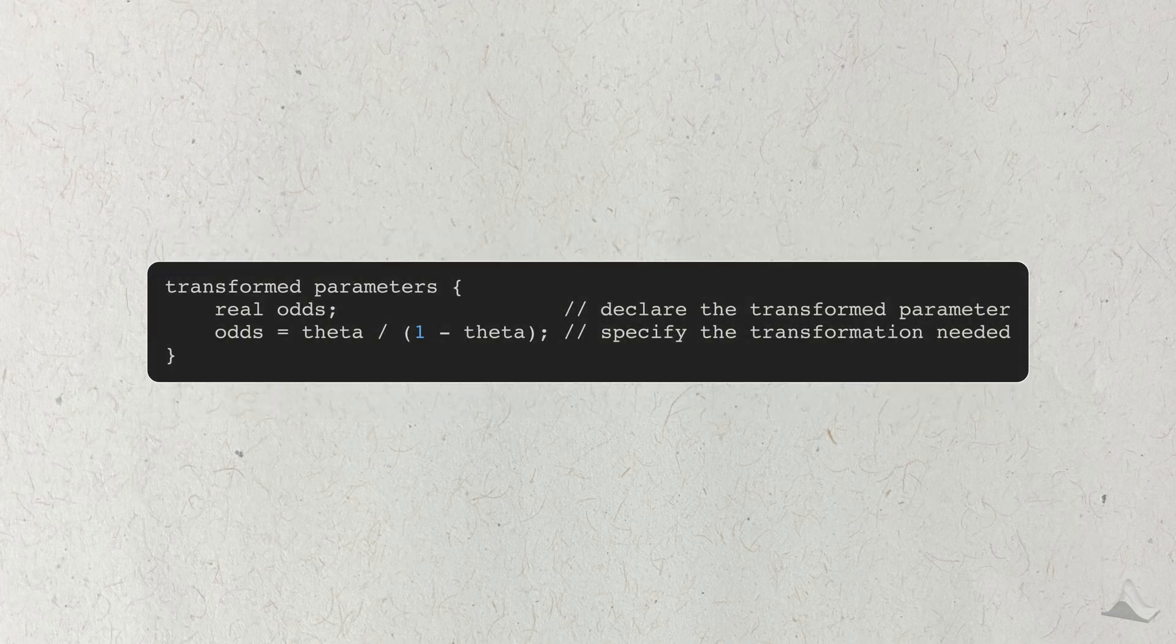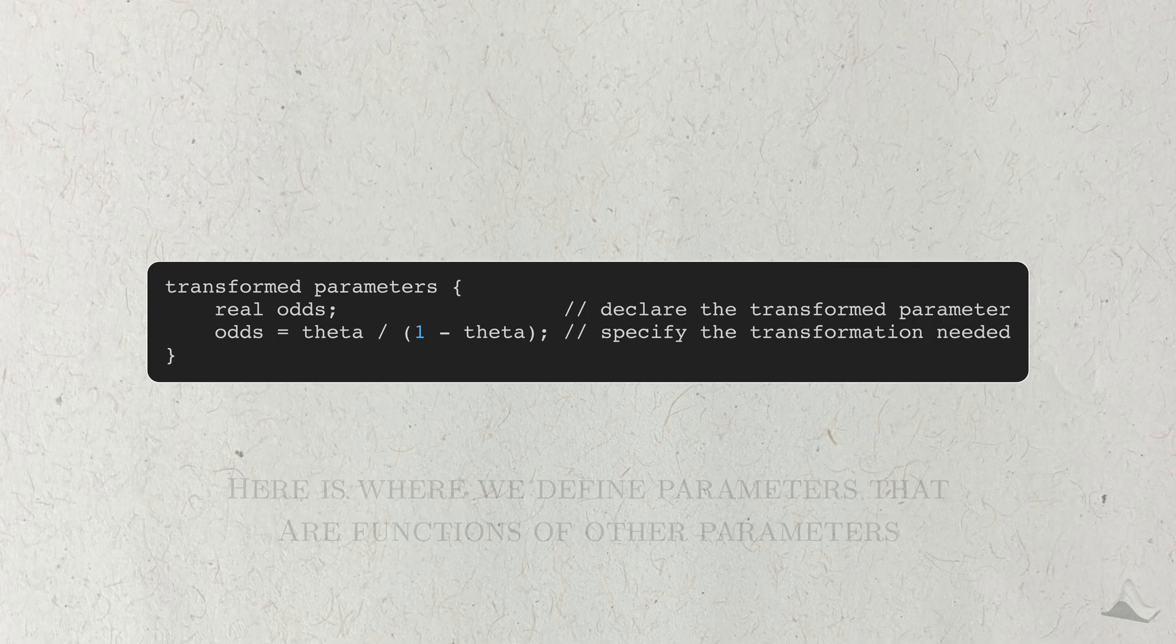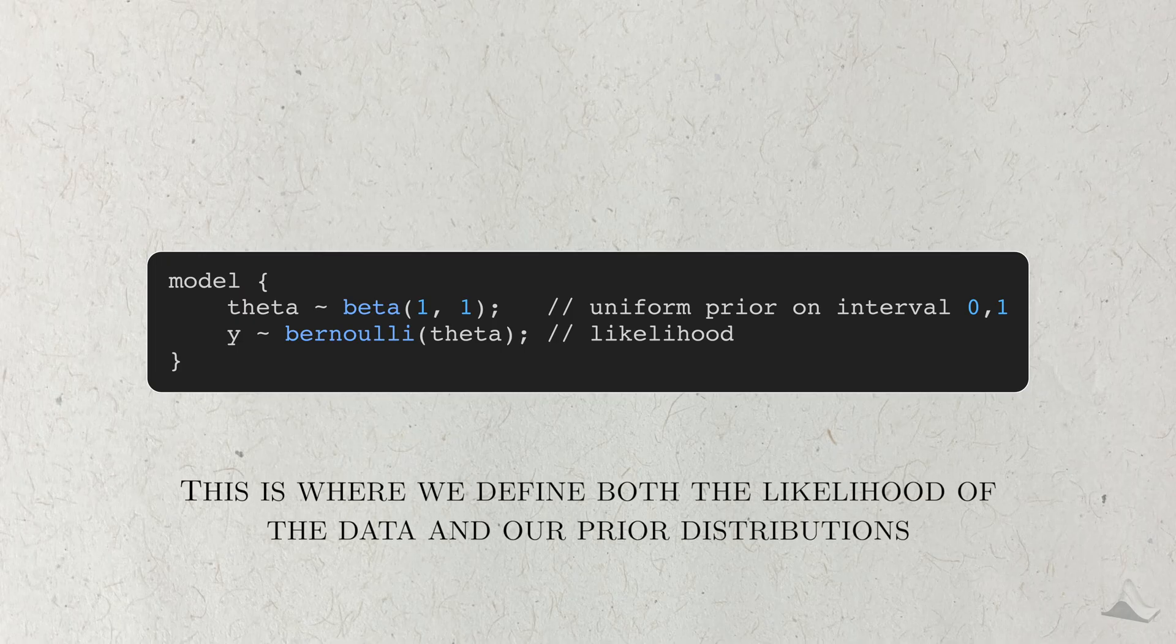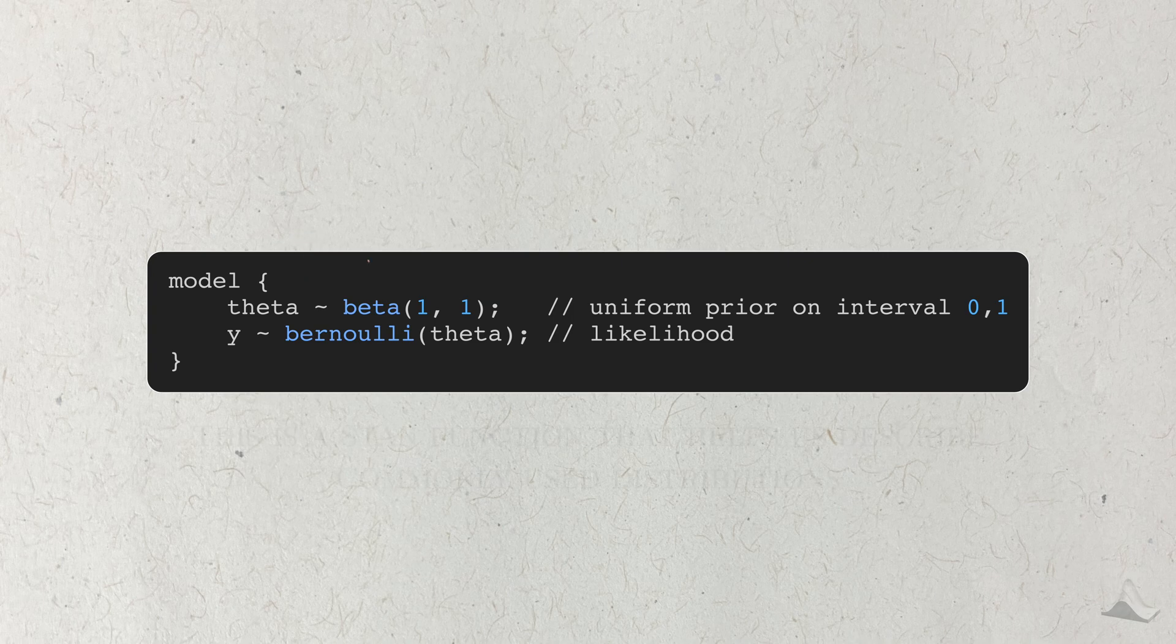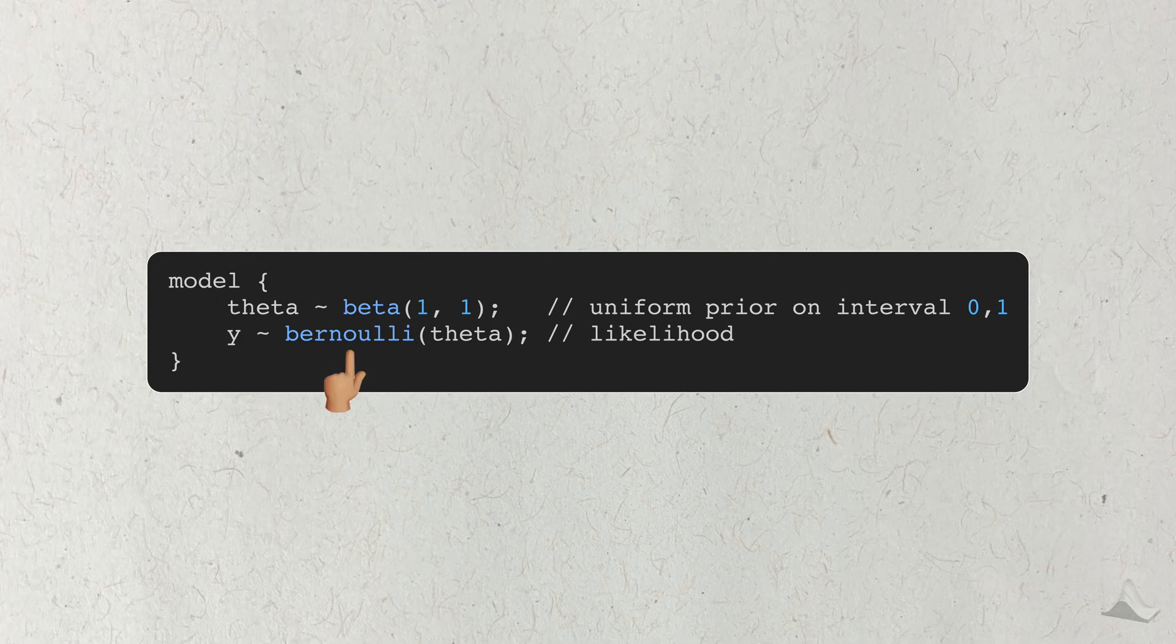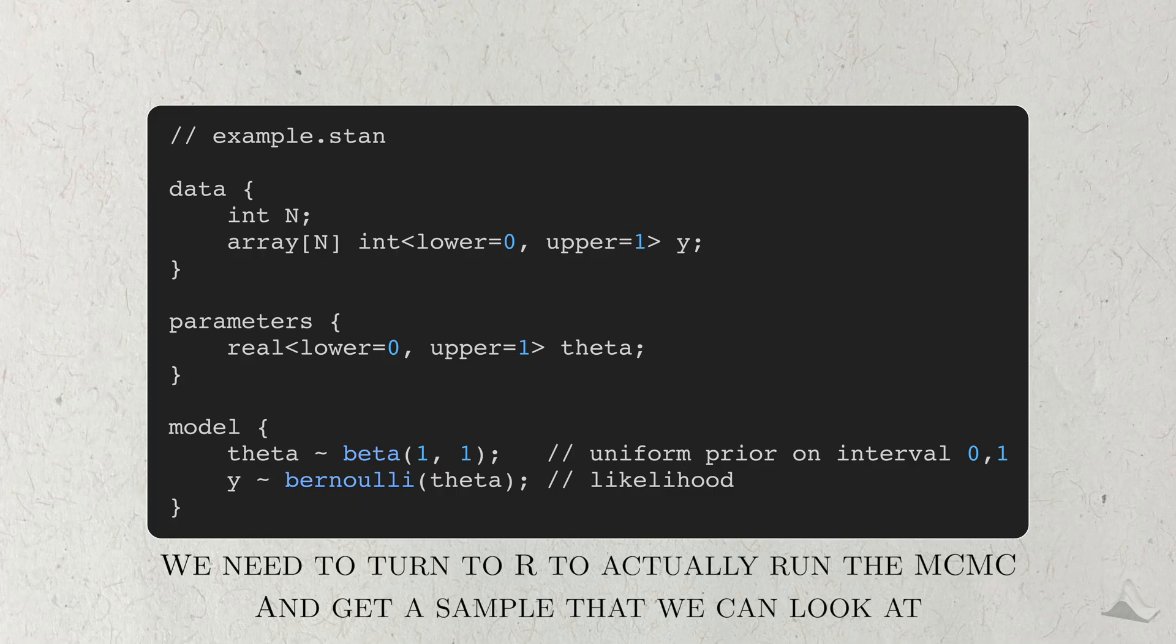There's also another type of program block called a transformed parameters block. And this block is also used to describe parameters, but specifically parameters that are functions of parameters defined in our first parameter block. For example, we could declare that we want the odds to be a parameter in this model, and we'd specify it as theta over 1 minus theta. Finally, we have the model block, where we describe both the likelihood of the data and the priors of the parameters. Here, I gave theta a beta(1,1) model as the prior. Distributions are conveyed with this tilde symbol, similar to mathematical notation. This beta function here is one of several functions that STAN has for describing common distributions. We'll do something similar with the data, giving it a Bernoulli distribution and using theta as the parameter within it. By itself, the STAN file doesn't do much. It only describes the Bayesian model.